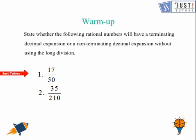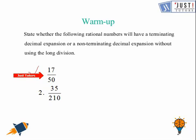The first one is 17 over 50. In the denominator, if you do the factorization of 50, you will get the form which is 2 raised to the power n times 5 raised to the power m. That means this is terminating.